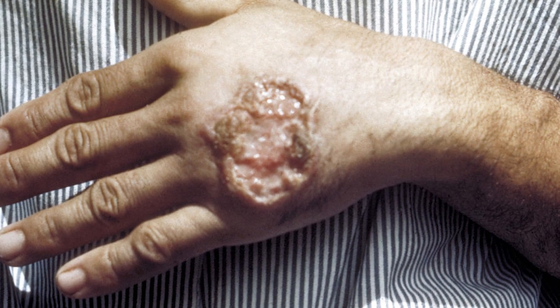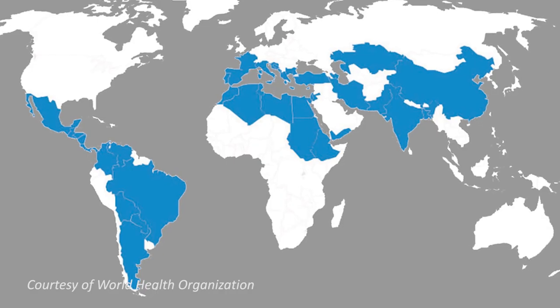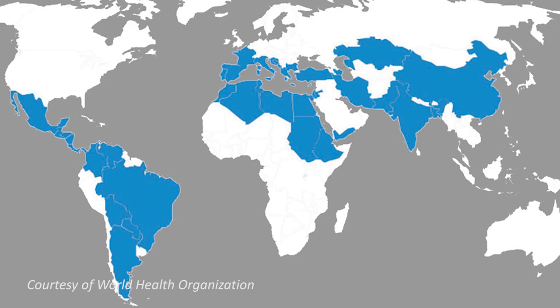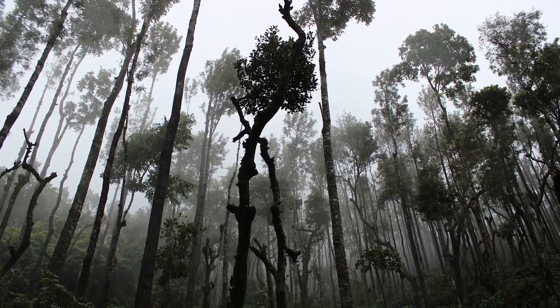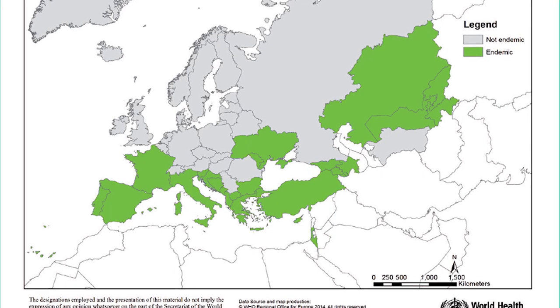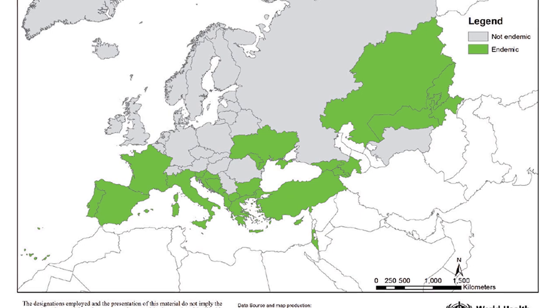The disease causes painful and disfiguring lesions. It can also affect the liver and spleen and become fatal. 12 million people are currently infected with leishmaniasis and 350 million in 88 countries around the world are at risk. Leishmaniasis is found mainly in tropical and subtropical regions. However, global warming is changing the disease distribution and now we have more cases in southern Europe.